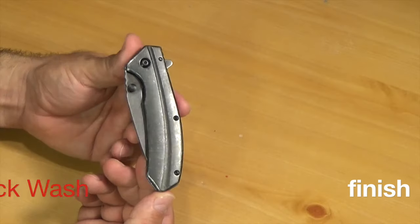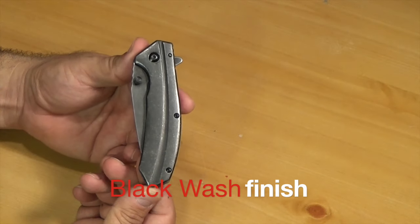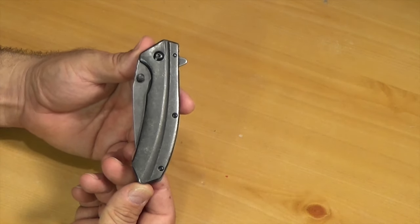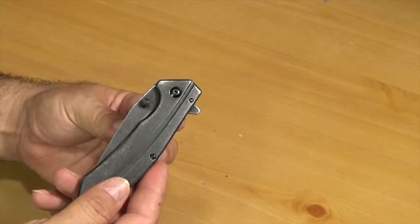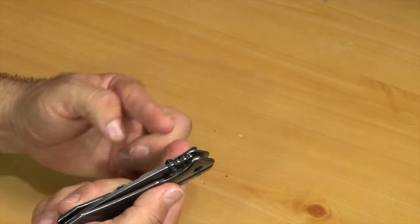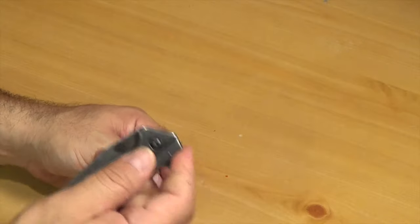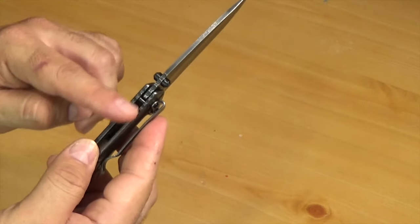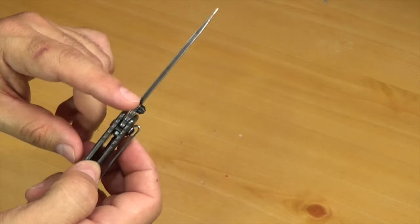Check it out. So this is going to be the black wash finish. An all steel design. This is the spring assist. You got a flipper. You got dual thumb studs. You got a little jimping here on the frame.